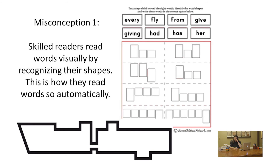Let's spend time on the misconceptions regarding reading as a visual process and how instruction has aligned with these misconceptions. One misconception still in existence is that skilled readers learn to read words automatically because of their shapes — tall letters, dangling letters, curves, loops, the outline of the word. It's often believed that these shapes or outlines are physical features of a word that cue the reader to retain it as a visual thing in memory.